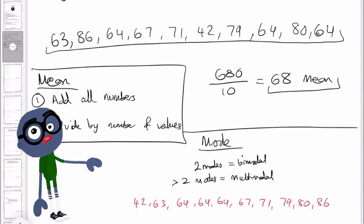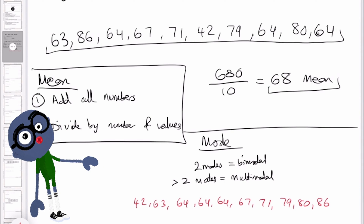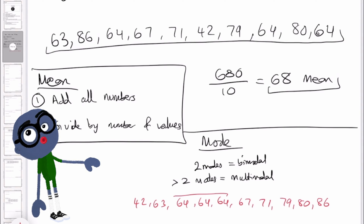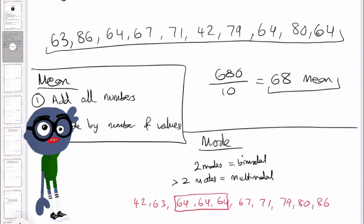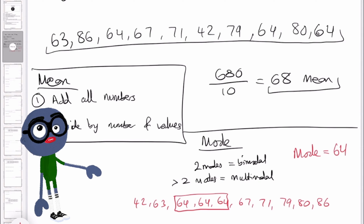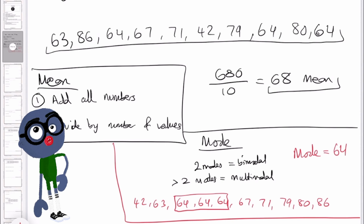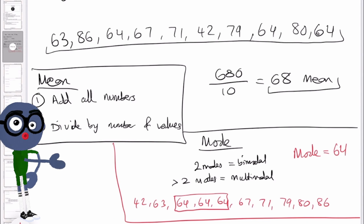I've now put all the numbers in order. We can see that 64 occurs three times and all the rest appear once, so our mode is 64. We've now got our mean and our mode — let's now focus on the median.